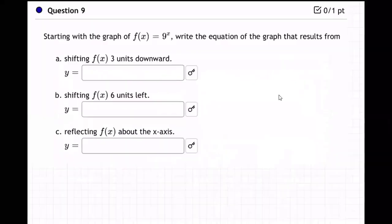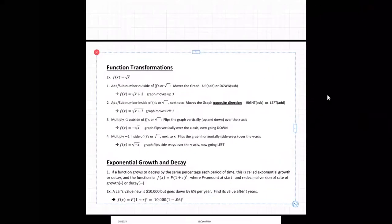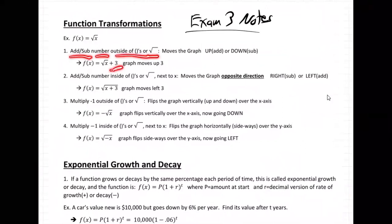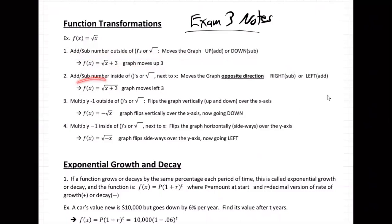Let me grab the notes and paste them in so you can see. From the exam three notes on function transformations: if you add or subtract a number outside of the parentheses or square root, that moves the graph up for adding, down for subtraction. If you add or subtract a number inside next to x, it moves the graph in the opposite direction — right for subtraction, left for addition.